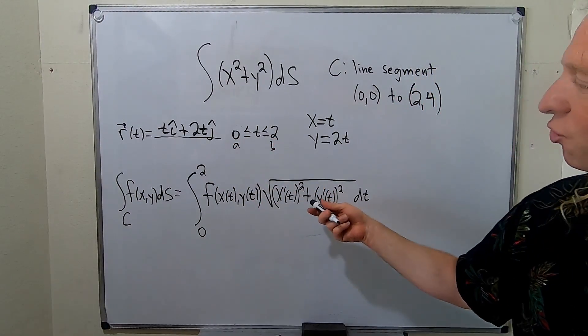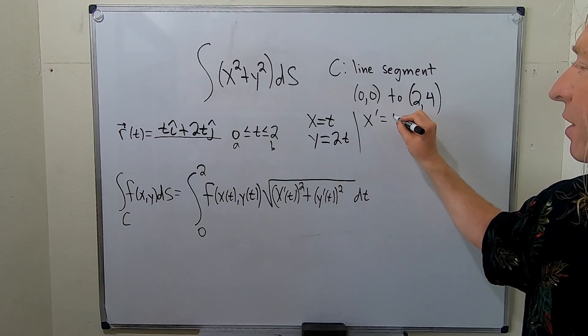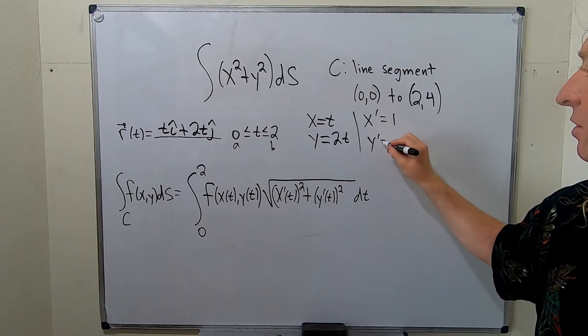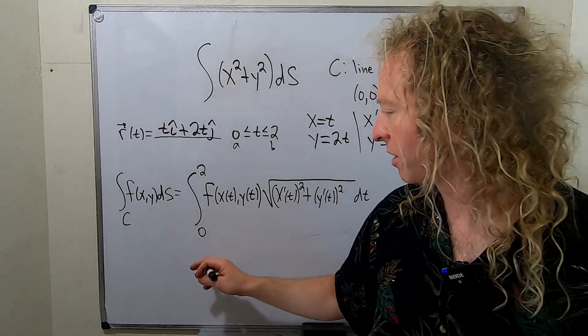We're going to need the derivatives. The derivative of x is 1 and the derivative of y is 2. We're taking the derivatives with respect to t.